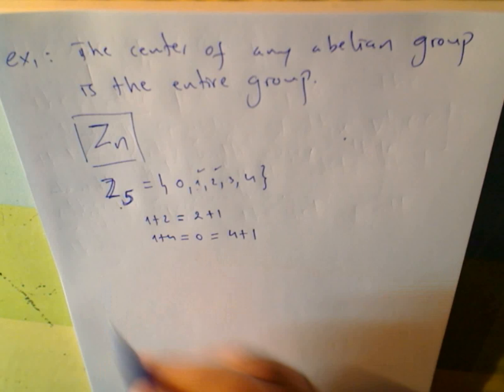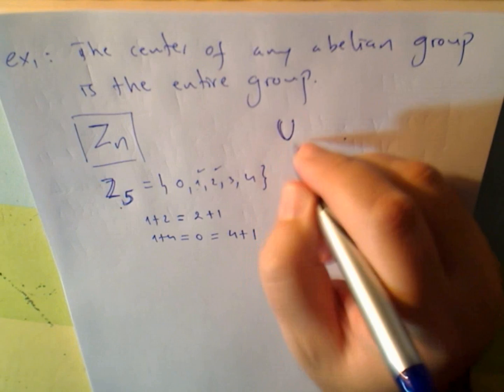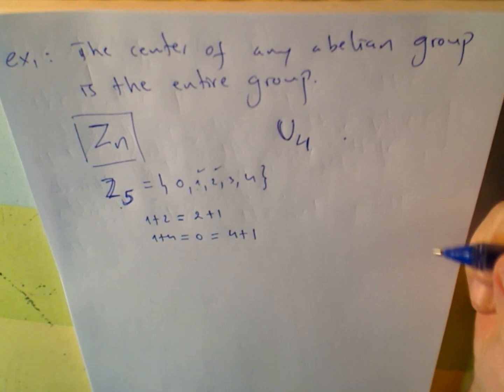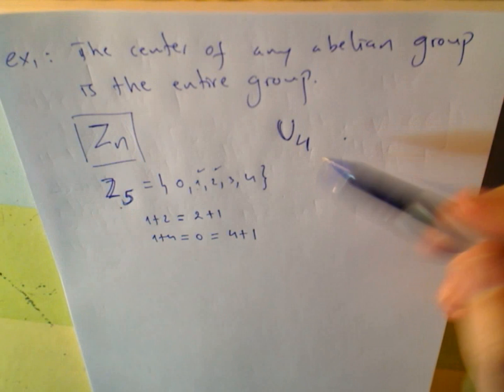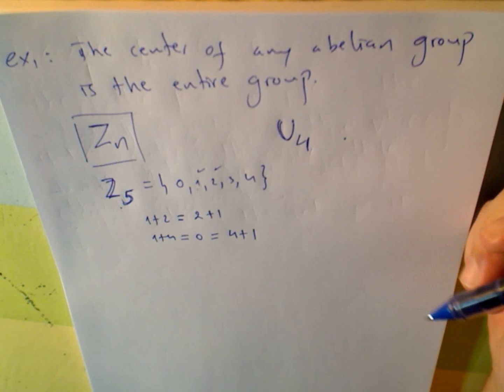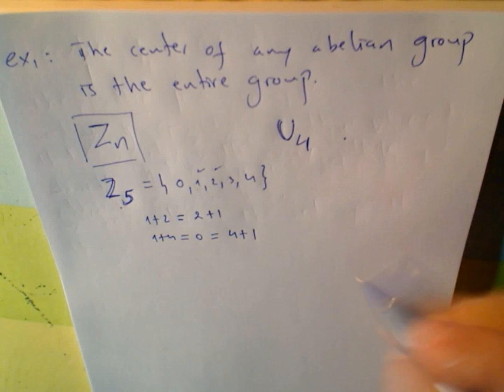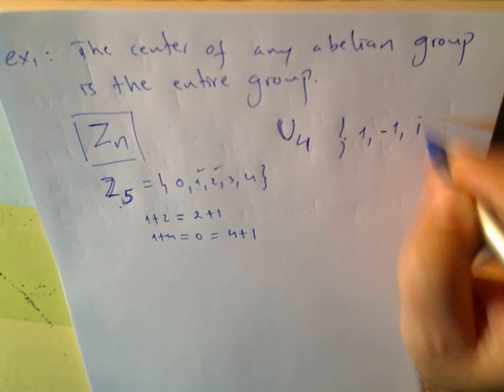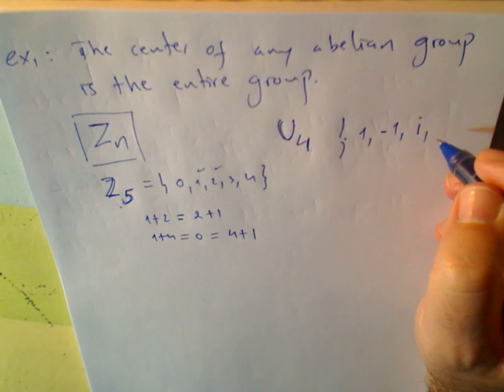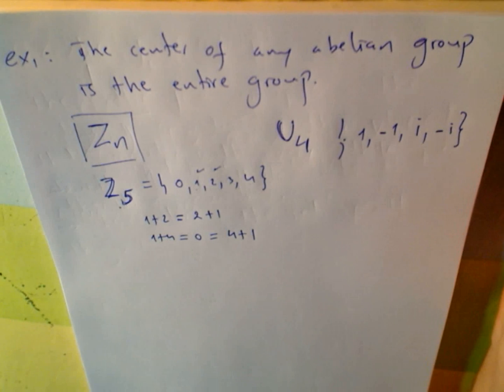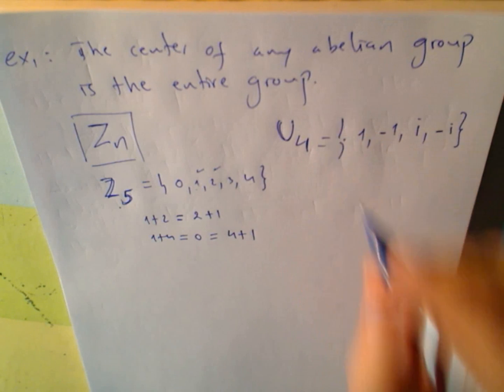The roots of unity, like the U4, the famous Klein-Fier-Krupp, this root of unity is also 1 minus 1, i minus i. This is also, under addition, of course, a commutative group, and so, the center is the entire group.